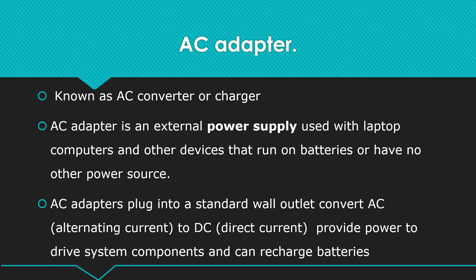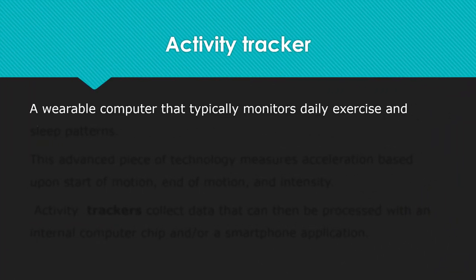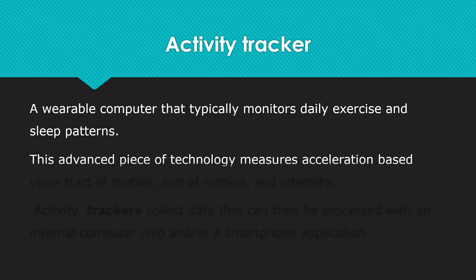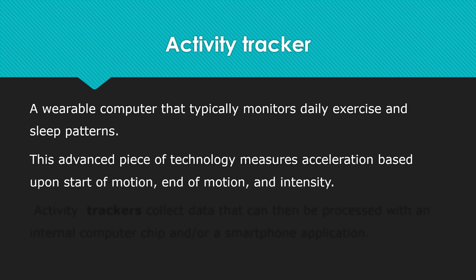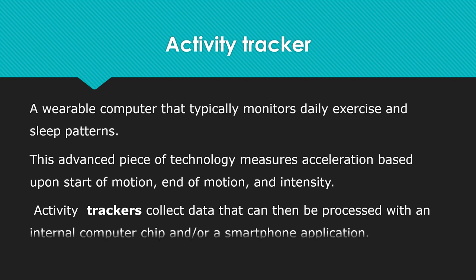Activity tracker is a wearable computer that typically monitors daily exercise and sleep patterns. This advanced piece of technology measures acceleration based upon start of motion and intensity of activity. Activity trackers collect data that can then be processed with an internal computer chip and/or smartphone application.